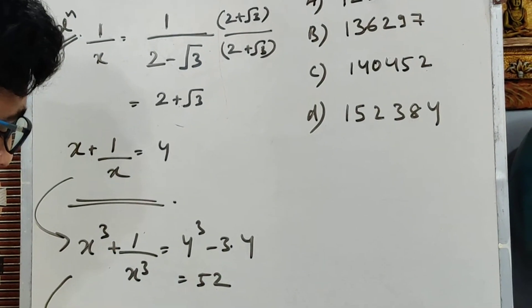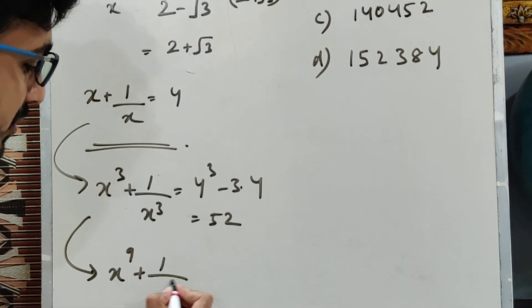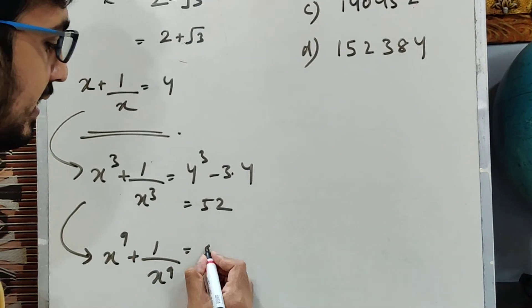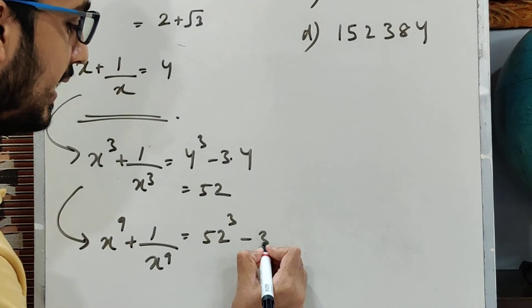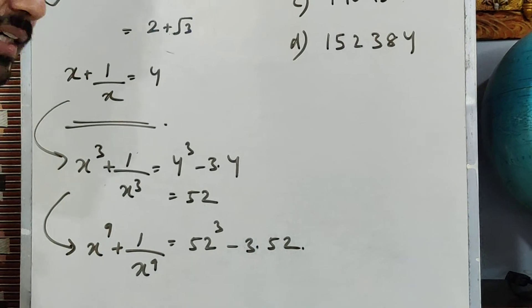Now I need to find x to the power 9 plus 1 by x to the power 9. This value will be 52 cube minus 3 into 52.